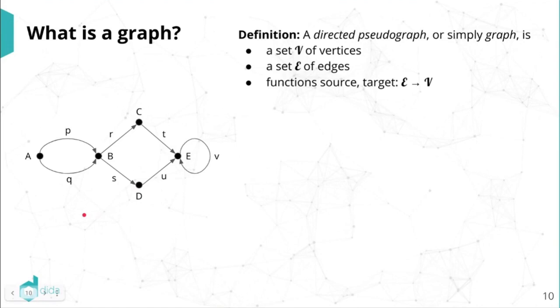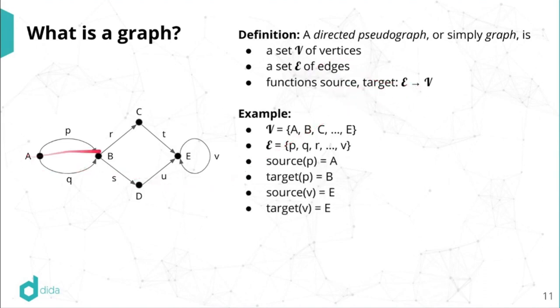So what is a graph? Or if to be very precise, we could call this a directed pseudo graph. So a graph is given by a set of vertices that will denote curly V, then a set of edges that will denote curly E, and then two functions from E to V that I call source and target. So in my example, the set of vertices would be A, B, C, D, and E. The set of edges would be this small letters p, q, up to v. And then say, if I take my edge p here, its source is the node A, its target is the node B. And if I look at my edge v, its source is the node E, and its target is also E.